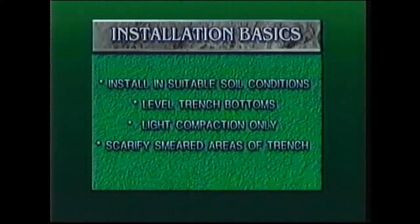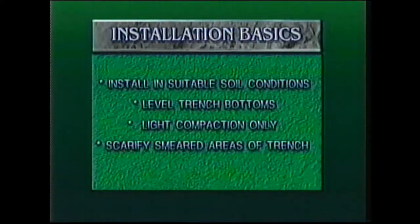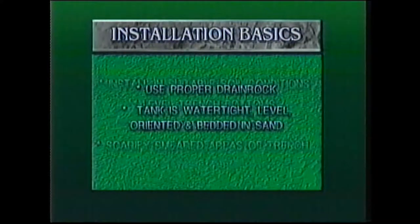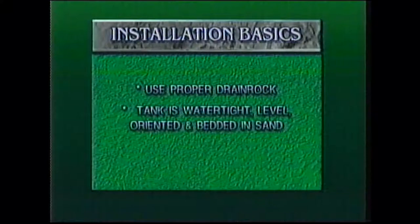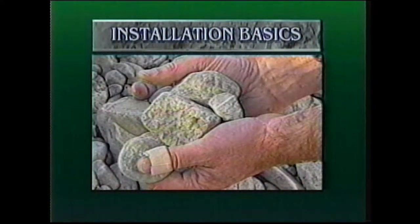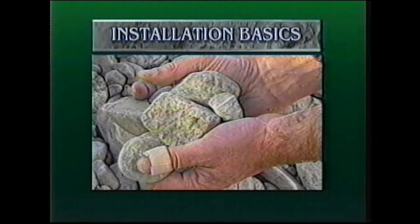There are a few basic things you need to know when installing your system. Install only when soil conditions are suitable and ensure your trench bottoms are level. Do not compact the backfill soil. Do not leave sidewalls of trenches smeared, as this reduces the ability of the soil to absorb liquid. Both the bottom and the sides of the trench can be scarified with a rake. Use proper drain rock — drain rock provides for dispersion of liquids, aeration and protection of the pipes. Drain rock should be clean and measure between 20 to 65 millimeters or three quarters to two and a half inches in diameter. Ensure that fine material from the excavation does not get into the drain rock.